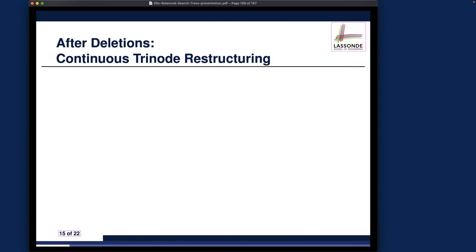We had a thorough discussion on how we can restore the tree balance after insertions, and we got four cases: case one - left rotation, case two - right rotation, case three - left-right double rotations, and case four - right-left double rotations. Make sure you review these four cases before continuing with the current part of the lecture.